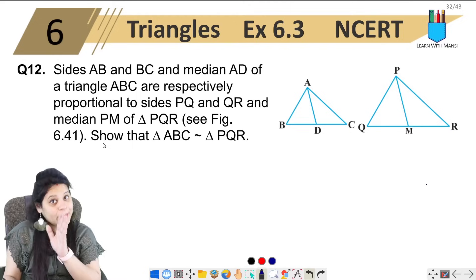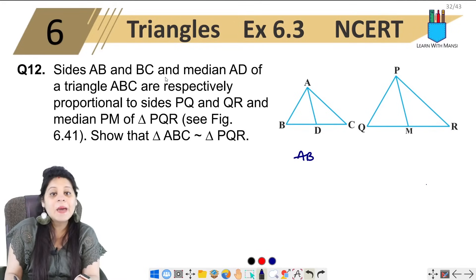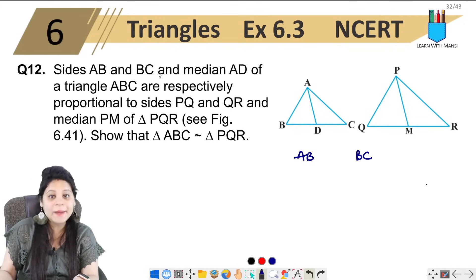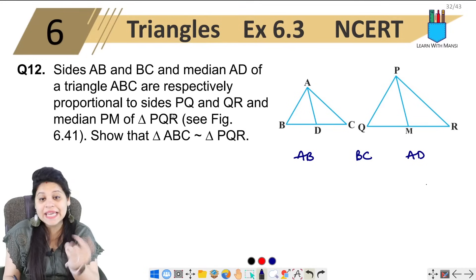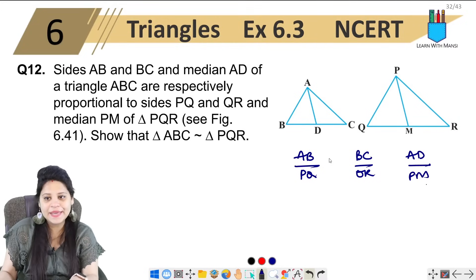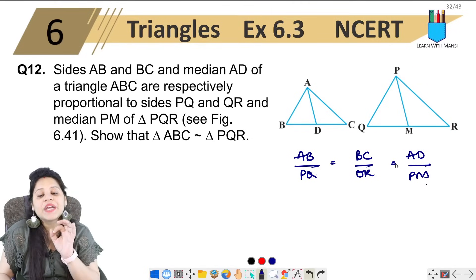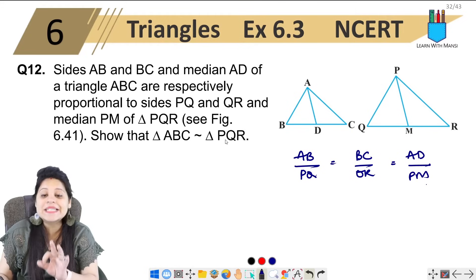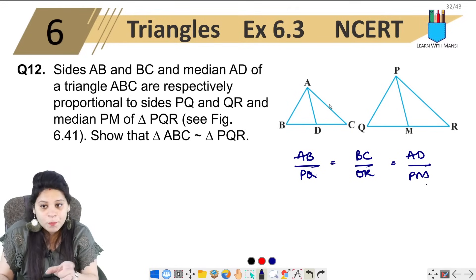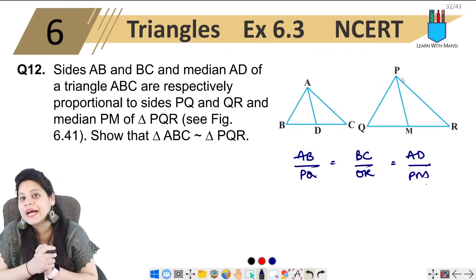What is given here? Let's write them. Side AB, BC, and median AD of triangle ABC. This is proportional to PQ, QR, and median PM — this is given in the question. We have to prove that triangle ABC is similar to triangle PQR. This whole triangle is similar to this whole triangle. This is what we need to prove.